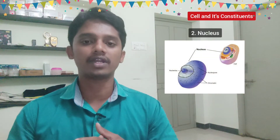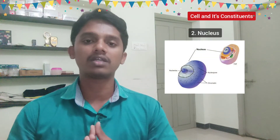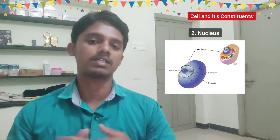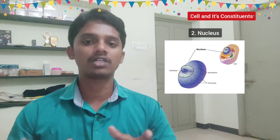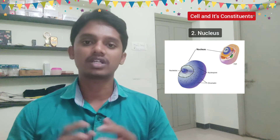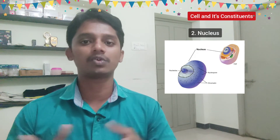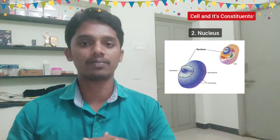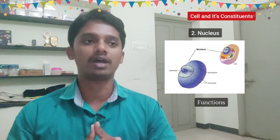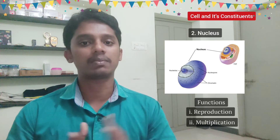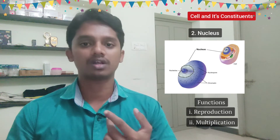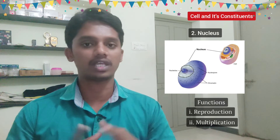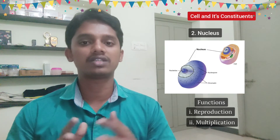The second component is the nucleus. There is a nucleus in each and every cell, except red blood cells — RBCs do not have a nucleus. In skeletal muscle cells, there are multiple nuclei. The function of the nucleus includes reproduction and multiplication — that is, cell division. When the cell divides, the nucleus divides, because the nucleus contains the genetic material.